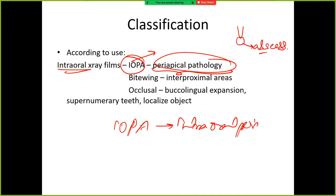We see periapical pathology, we generally use intraoral periapical. It is used for caries as well, obviously, but also for periapical pathology. Then in intraoral, we also have bite wing.